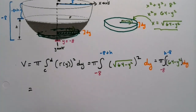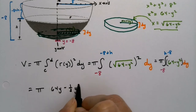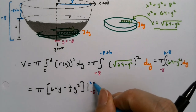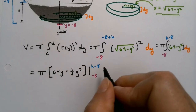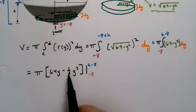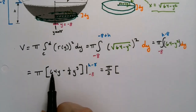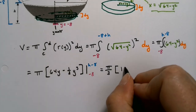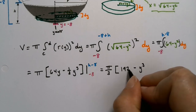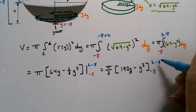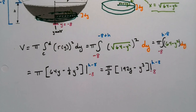So the integral is π times the integral from −8 to h − 8 of (64 − y²) dy. Integrating gives π times [64y − (1/3)y³] evaluated from −8 to h − 8. To make the upcoming algebra easier, I'll factor out the 1/3 now, rewriting the antiderivative as (1/3)(192y − y³). Let me verify: 192 divided by 3 is 64 — that checks out.